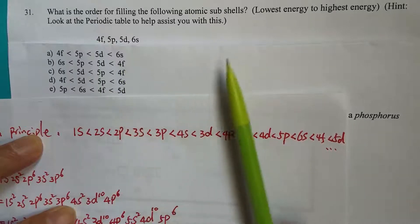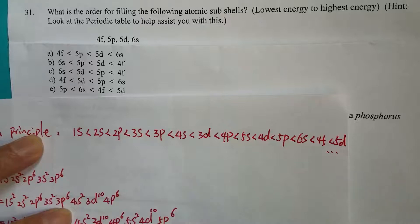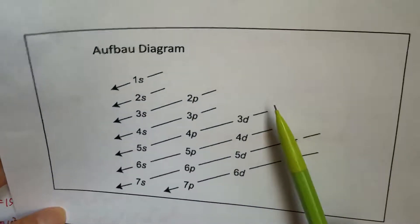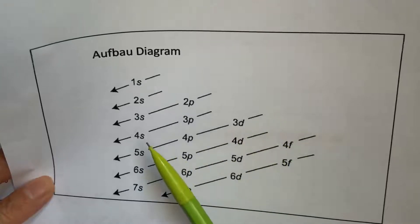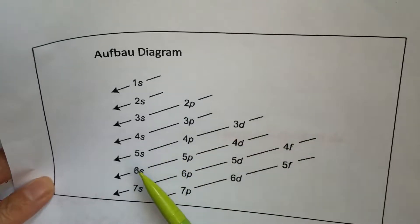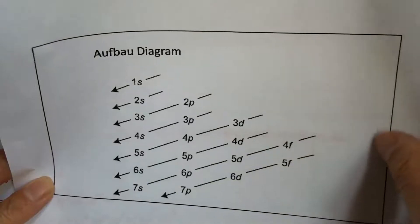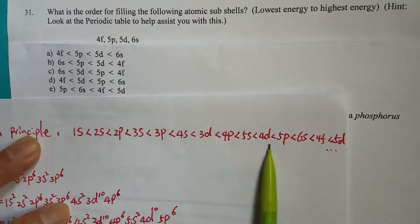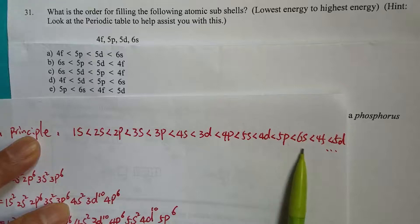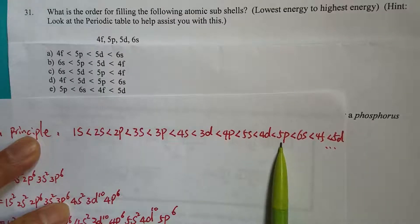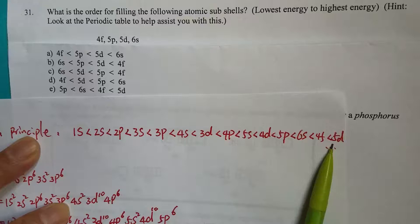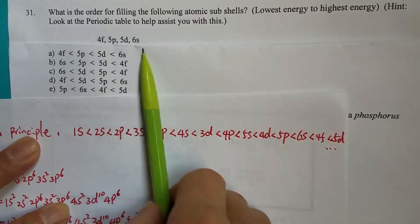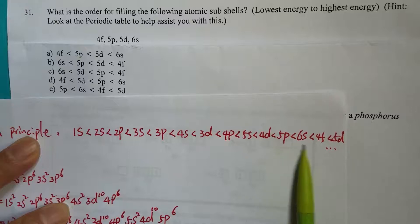Remember the penetration. Remember the Aufbau diagram — it does not go directly according to the lowest principal quantum number. So going back to our subshells: 4f, 5p, 5d, 6s. I spotted 5p right here on the diagram. After 5p is 6s, then 4f, then 5d. I found all four orbitals, and this should be the correct answer, which matches choice E.